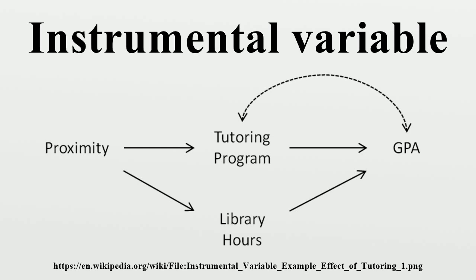Consider the following example. Suppose that we wish to estimate the effect of a university tutoring program on GPA at a university where the dormitories to which students are assigned is random. The relationship between attending the tutoring program and GPA may be confounded by a number of factors — students that attend the tutoring program may care more about their grades or may be struggling with their work. Given that students are assigned to dormitories at random, the proximity of the student's dorm to the tutoring program is a natural candidate for an instrumental variable.